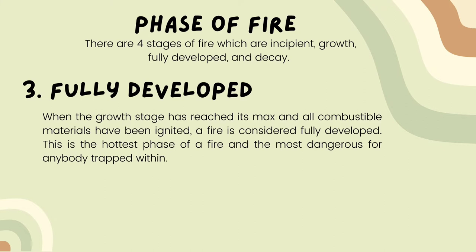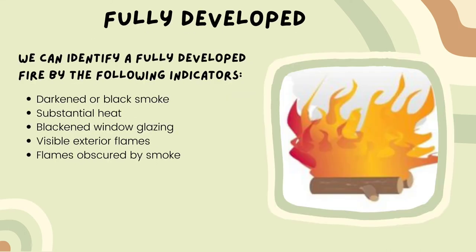Fully developed. When the growth stage has reached its max and all combustible materials have been ignited, a fire is considered fully developed. This is the hottest phase of a fire and the most dangerous for anybody trapped within. We can identify a fully developed fire by the following indicators: darkened or black smoke, substantial heat, blackened window glazing, visible exterior flames, and flames obscured by the smoke.